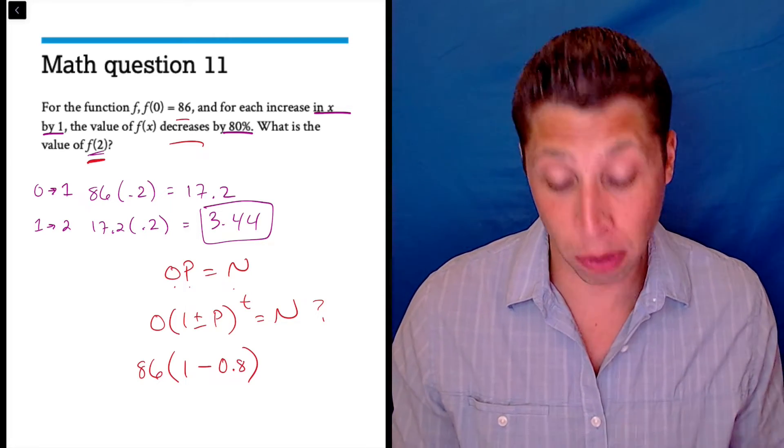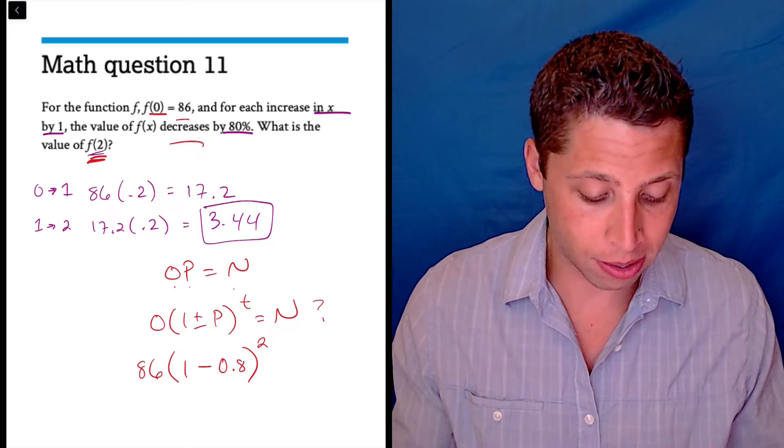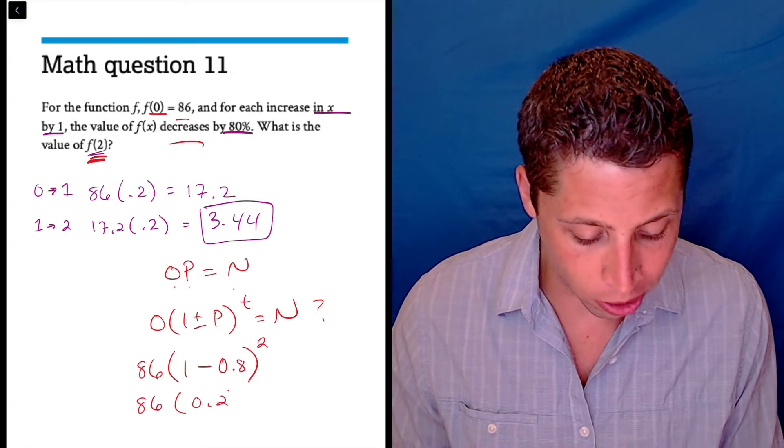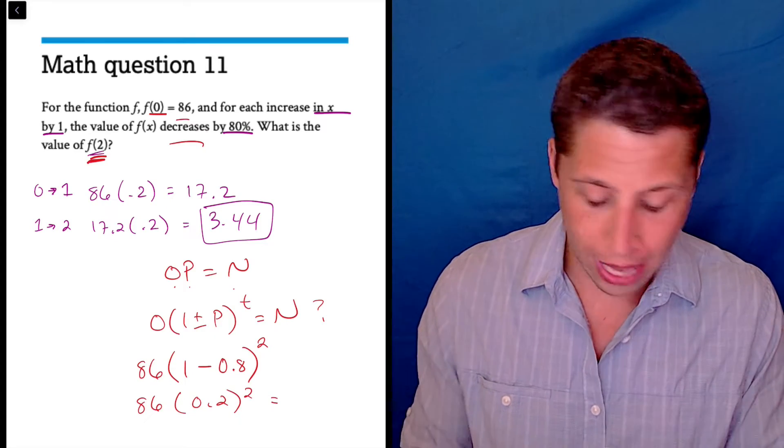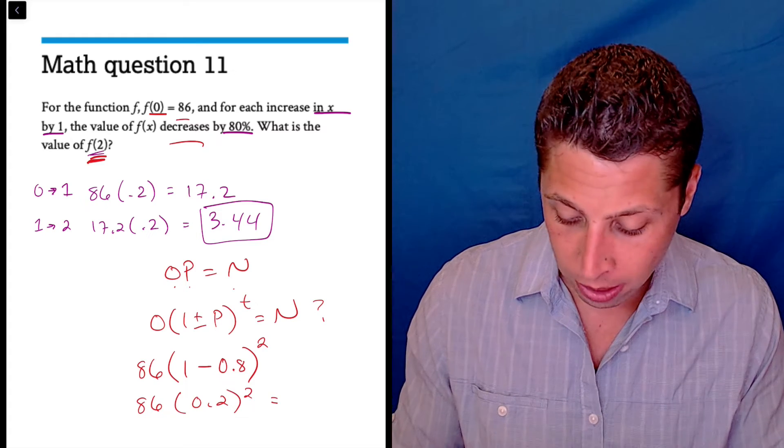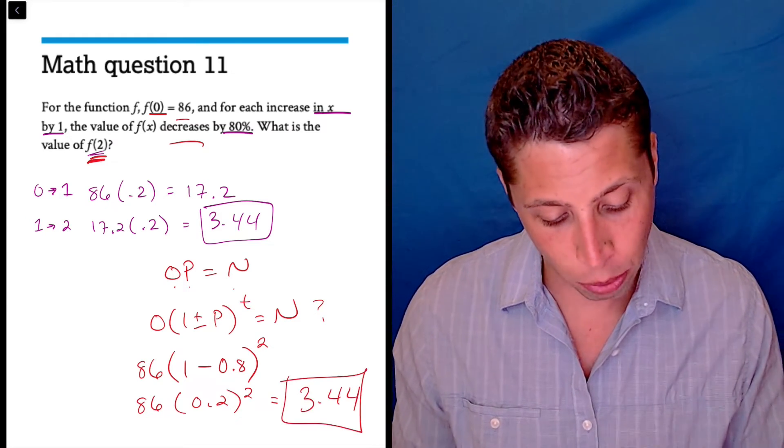And then T is the number of times we do it, so that's going from 0 to 2, that's kind of like my x, and so now we have an equation. We can simplify it if we want. There's that 0.2 we saw before, and then we can square it. 0.2 squared is 0.04 times 86 is, no surprise, 3.44.